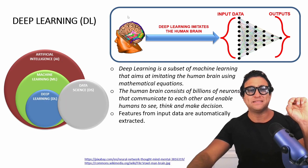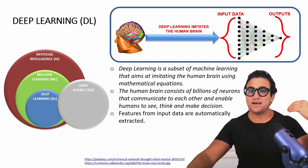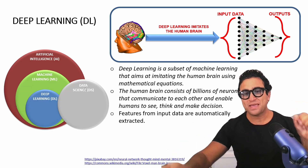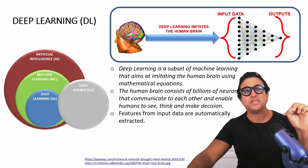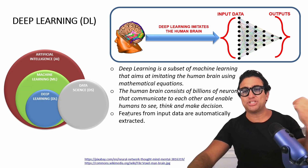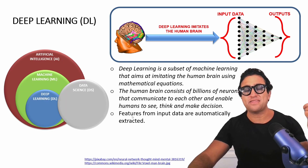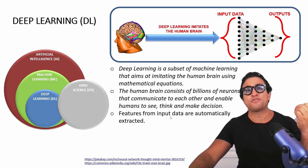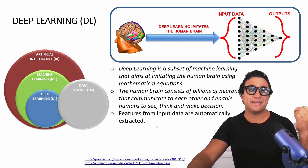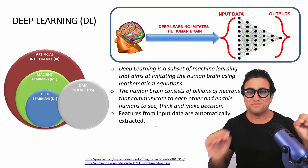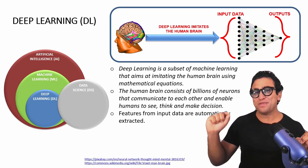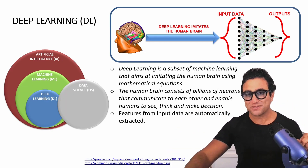Please note that deep learning is the hot field right now. The key differentiator between deep learning and machine learning is that features from input data are automatically extracted. Hang on to that thought, because a great example is coming up in the next couple of slides.